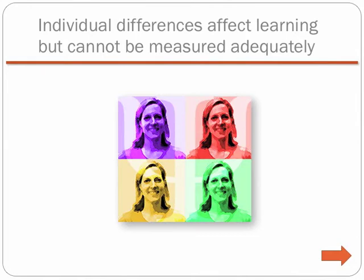Research has not provided consistent support for aptitude-treatment interactions, although it has shown many instances in which the interactions do occur. Methodological issues have also limited researchers from generalizing about this premise. Most practitioners, however, find high-face validity in the notion that different learners require different instructional strategies based on their individual differences. The safe conclusion is that individual differences do affect learning, but researchers do not have the tools to adequately measure or study them.